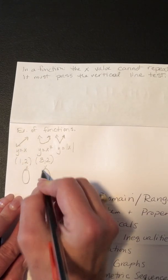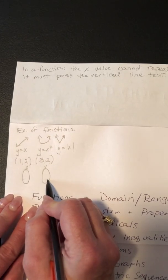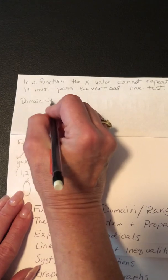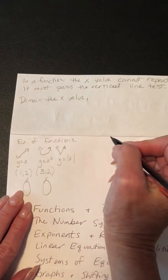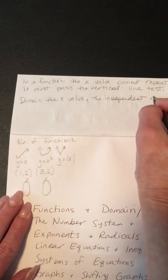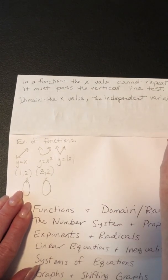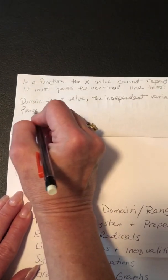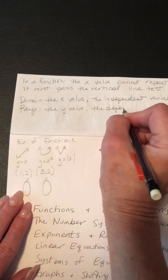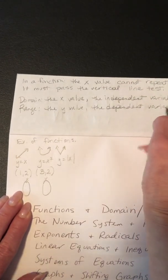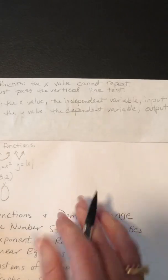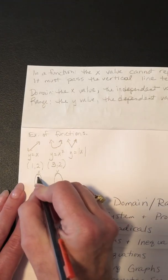Let's also do a mapping. In a mapping you could call this X and this Y, or you could call this domain and this range. Domain is the X value, or the first number in the ordered pair, or the independent variable — also called the input. Range is the Y value, the dependent variable, and the output.